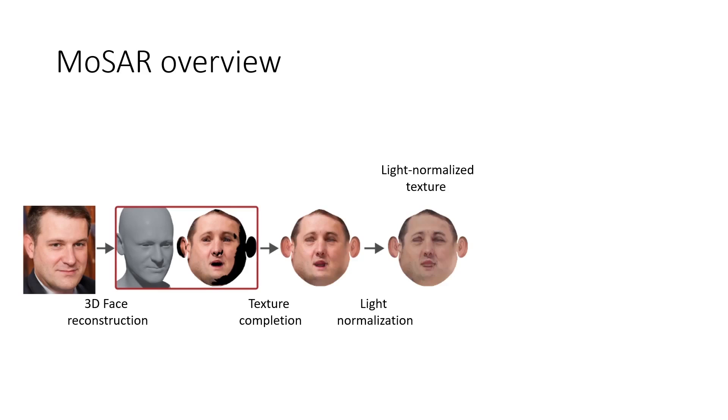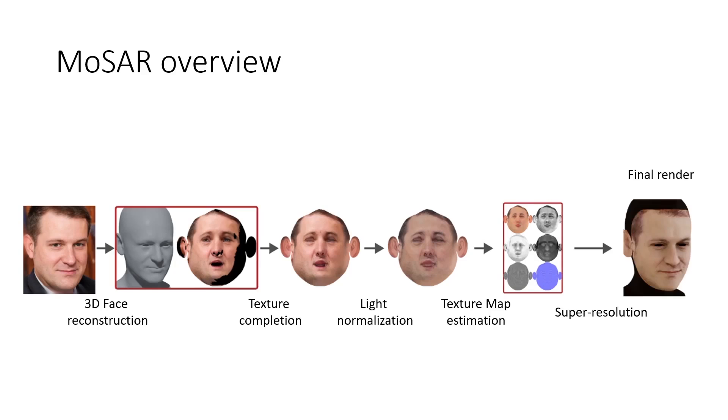Next, we normalize the light in the scene to make it uniform across the face. We then separate the intrinsic face reflectance, and finally, perform super-resolution of the texture maps and render the scene.